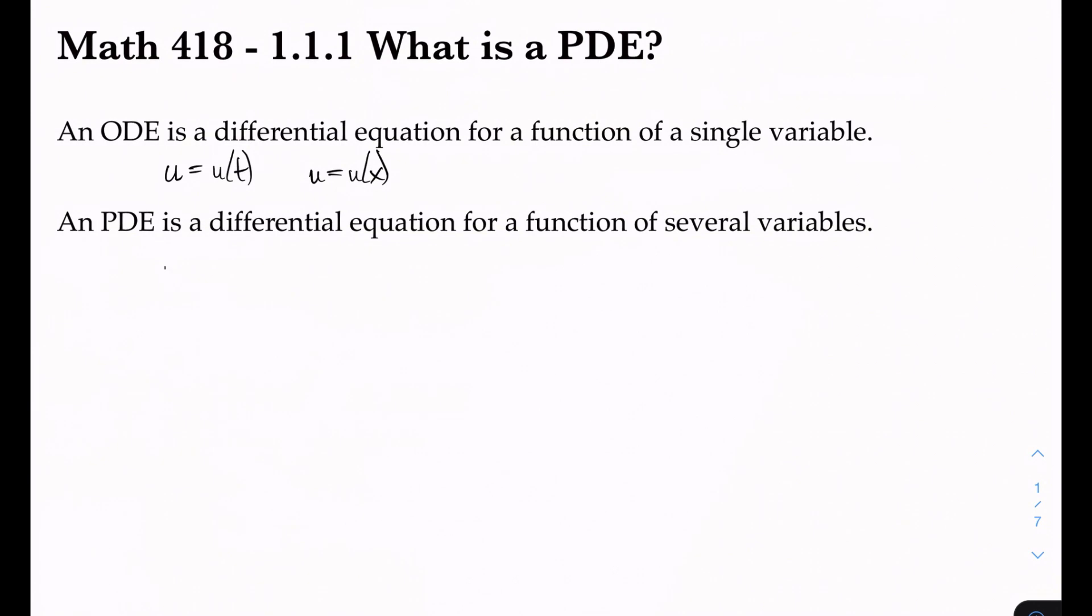For a PDE, our unknown function will be a function of maybe x and t, or maybe it'll be a function of x and y, or maybe it'll be a function of a whole bunch of variables, like maybe it's got a couple spatial variables, so a point in the plane, and then also a time coordinate, if we're doing something like modeling a vibrating drum head.